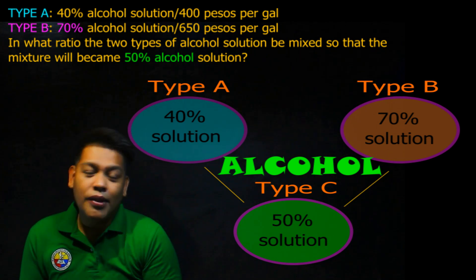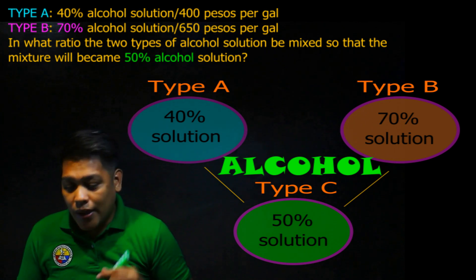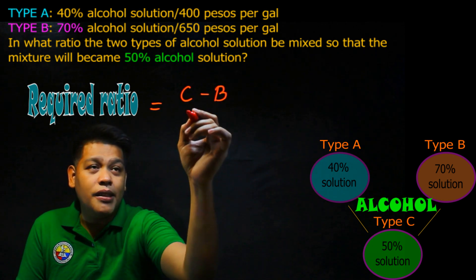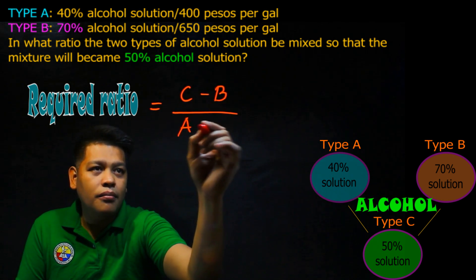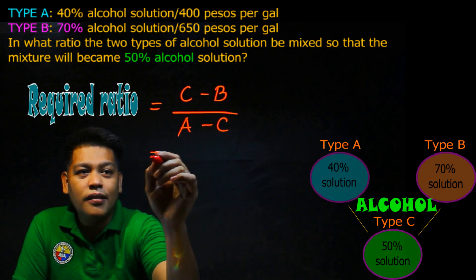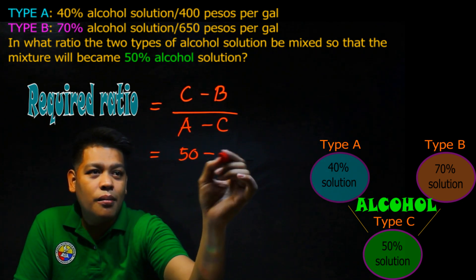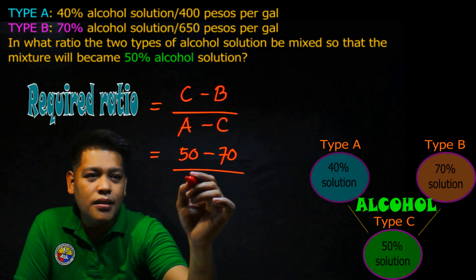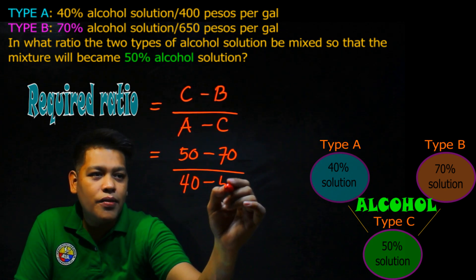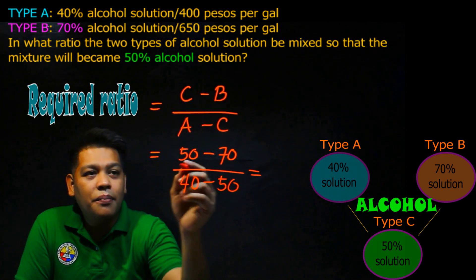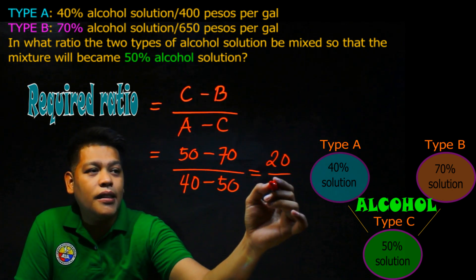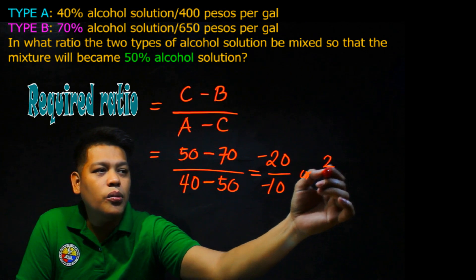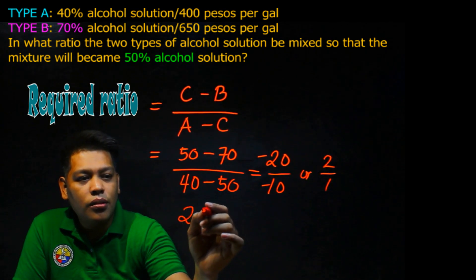That's the mixture problem. Using the same required ratio formula — Type C minus Type B over Type A minus Type C — we compute: 50% minus 70% equals negative 20, and 40% minus 50% equals negative 10. Negative divided by negative gives positive, so we get 20 over 10, which simplifies to 2 over 1. The ratio is 2 is to 1.